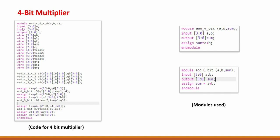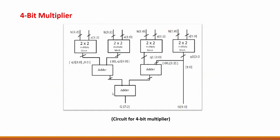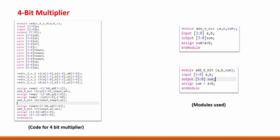Here is the code for the 4-bit multiplier. We define our inputs and outputs, then use the 2-bit multiplier module 4 times as seen in the circuit. We assign the values based on the circuit, and the further modules used are a 4-bit adder and a 6-bit adder. It is apparent from the code exactly where the 4-bit and 6-bit adders are used.